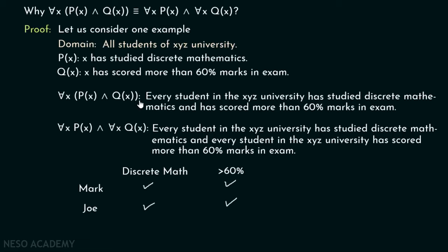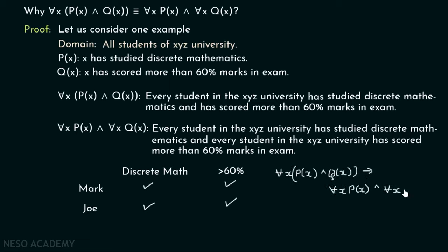Now, as the first statement is true, we check the second. 'Every student has studied discrete mathematics' — yes, that is true. 'Every student has scored more than 60 percent marks' — yes, that is also true. So we can say for all x P(x) ∧ Q(x) implies for all x P(x) and for all x Q(x) is satisfied. This confirms the forward implication.